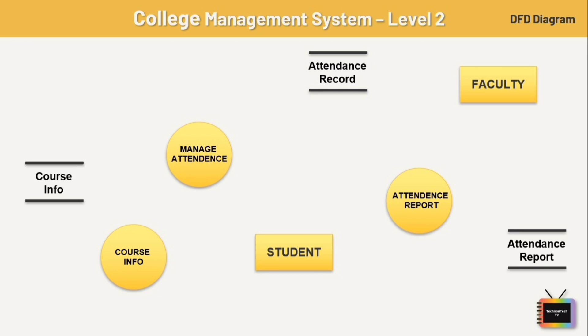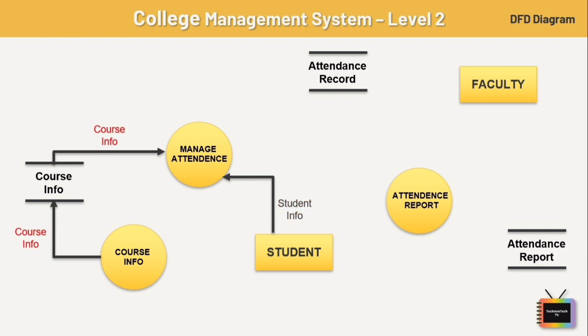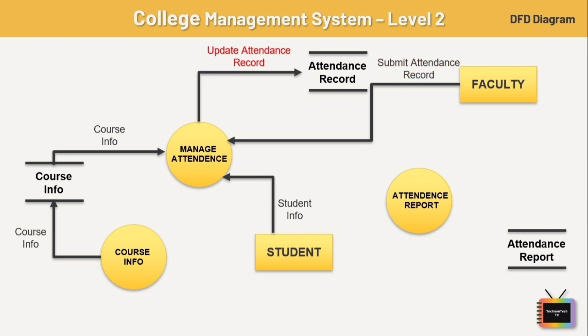Now let's see how data flows in this diagram. First, the student entity provides attendance information to the manage attendance process. The manage attendance process accesses course info from the course info database. Faculty submit the student attendance record to the attendance management process, which validates and updates the attendance record based on the information received. The updated attendance records are then stored and maintained in the database.